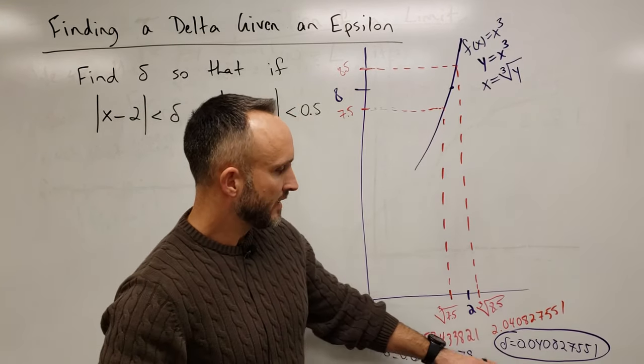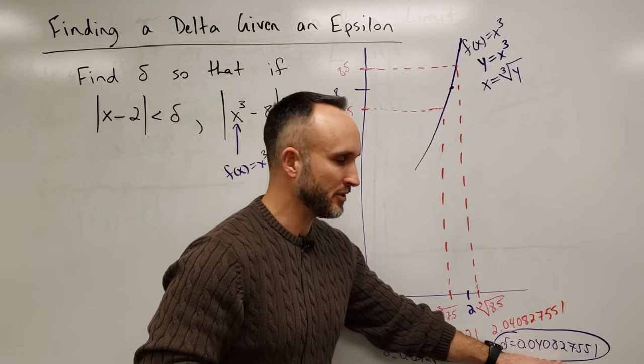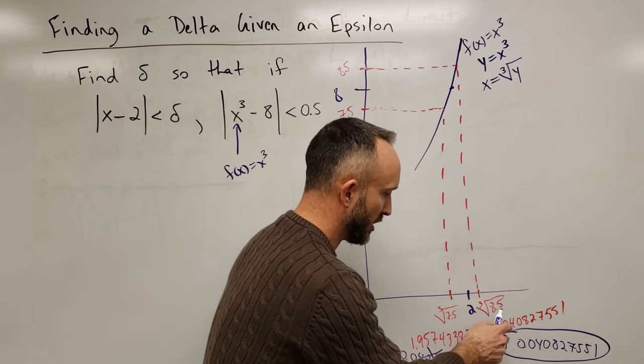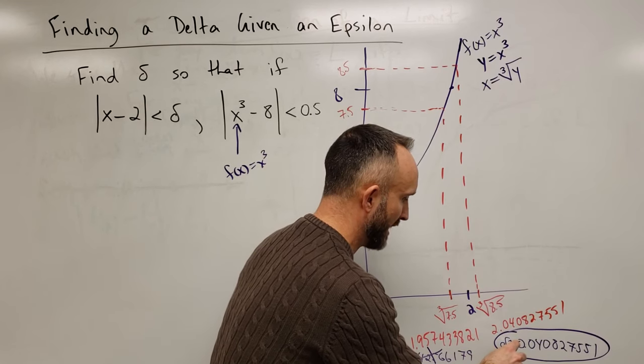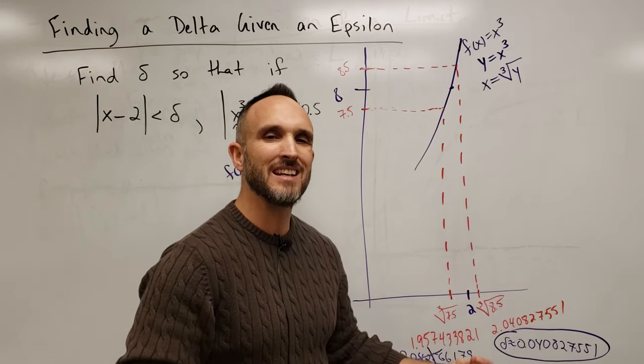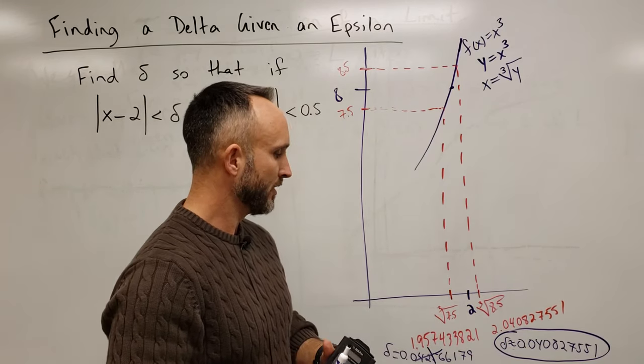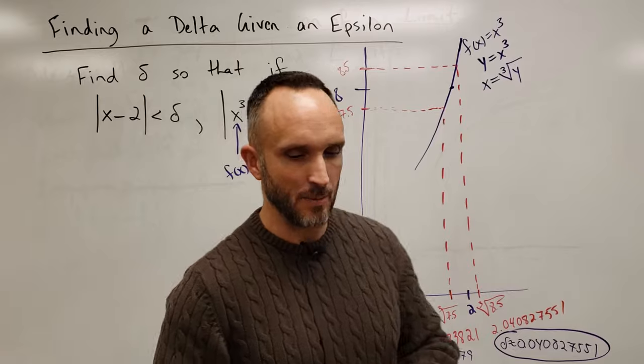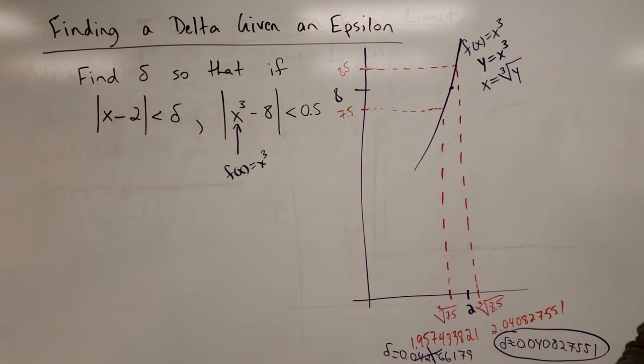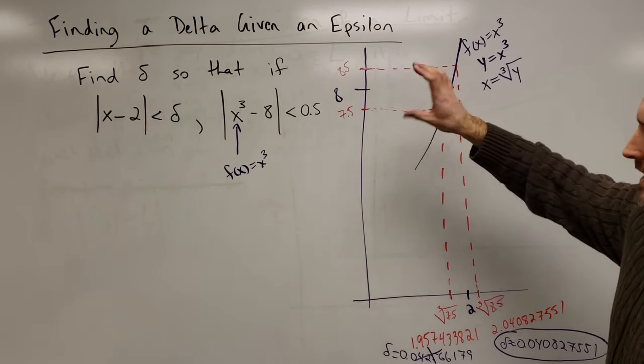Understand that this is the biggest delta approximately, by the way, because the cube root of 8.5 is irrational. We can't write down all the digits. So, this is about the biggest delta we could choose and, of course, anything smaller would work as well. So, this is a really great example now where you have to fill in the missing pieces to find the delta value and recognize the function, the epsilon, and the delta.